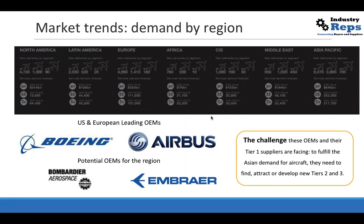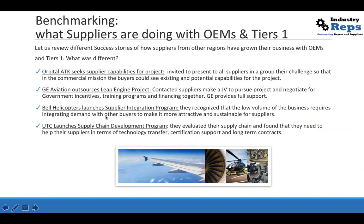Once you determine those OEMs, it's a matter of trying to find your position. We had a case in the past of a Tier 4 that wanted to approach Airbus, and they asked us: can you introduce us to Airbus? Of course we can, but they are too high in the tree — too far away from them. So it's very important to understand the value chain you want to get into and your place in it. Once we understand the demand and who the OEMs are, let's look at different strategies on how to approach them.